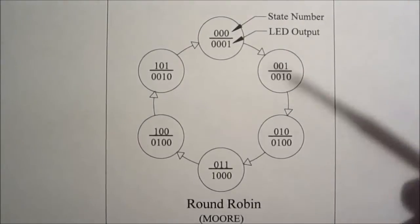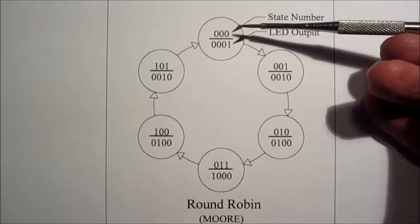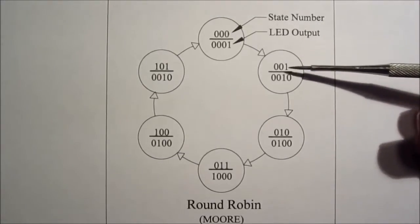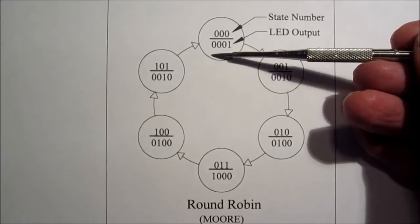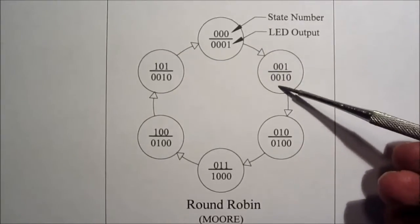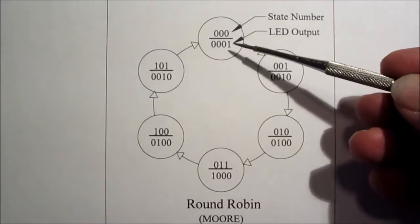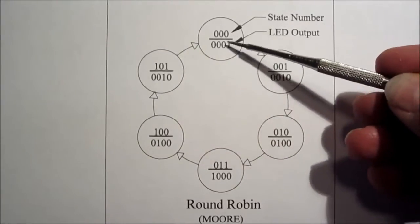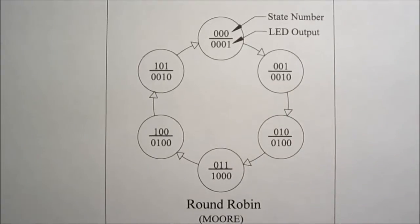This is a Moore machine. The notation shows the state number and the output below. We have a binary sequence of LEDs — the bit that's on shows which LED is lit — and these are the state numbers going from zero through five. We will look at the advantages and disadvantages of this and the other machines in a moment.